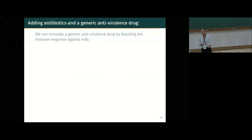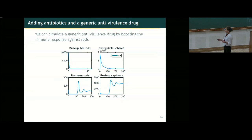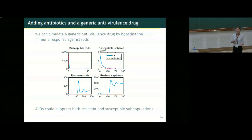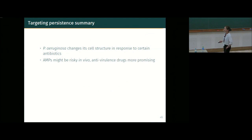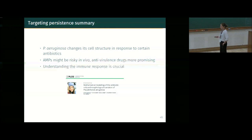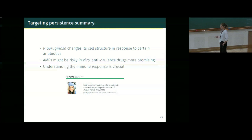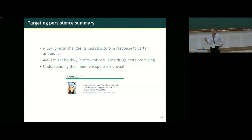The last simulation: instead of antimicrobial peptides, we simulate a generic anti-virulence drug that boosts the immune response against the rods. Compared to antibiotics alone, using anti-virulence drugs to boost immune response can actually clear the bacterial infection. To summarize this section: Pseudomonas changes its cell structure in response to certain antibiotics; antimicrobial peptides look good in vitro but might be quite a risky strategy in vivo; understanding the immune response is crucial; and detailed models of bacterial infections combined with detailed immune response models are needed to make real progress.